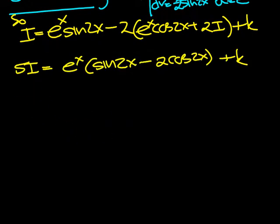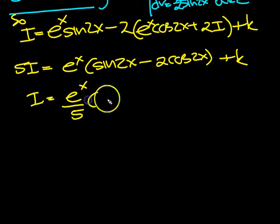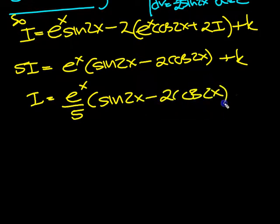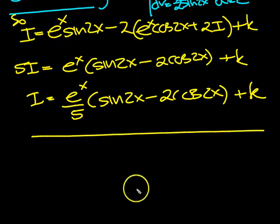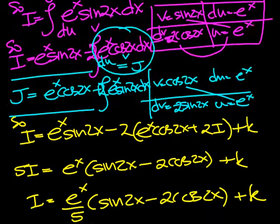And then we'll do i. It's e to the x over 5 sine 2x minus 2 cosine 2x plus k. There we go. That's question 19 done. Good. Let's go on to the next one then.